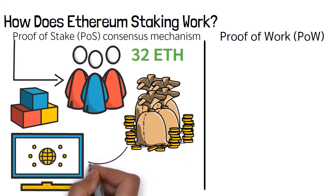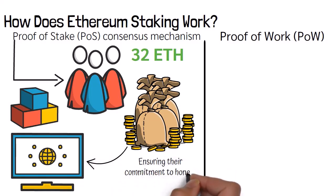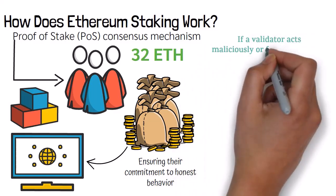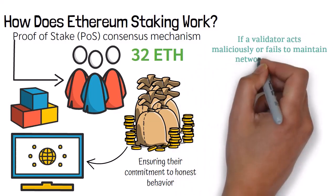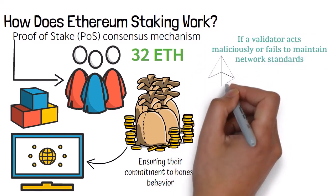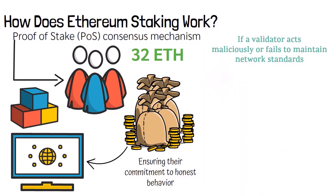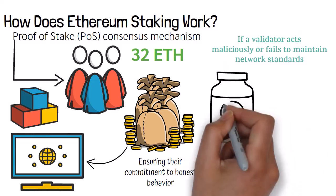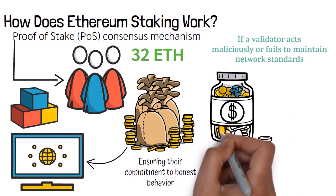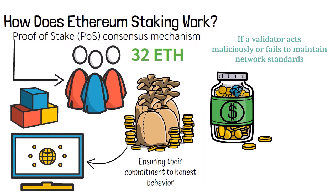The funds locked by validators act as collateral, ensuring their commitment to honest behavior. If a validator acts maliciously or fails to maintain network standards, a portion of their staked ETH can be slashed — taken away as a penalty. This slashing mechanism serves as a deterrent against misbehavior, ensuring that validators have a strong financial incentive to act in the network's best interest.